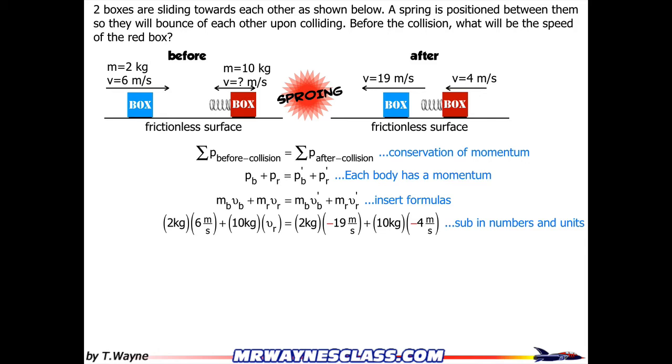Putting in my numbers, notice I've got a couple negative signs here. I've got the negative 19 meters per second and the negative 4 meters per second because according to my diagram above, they're all going left. Kind of like on a number line, I'm assuming things going left are going to be negative, things going right are going to be positive.